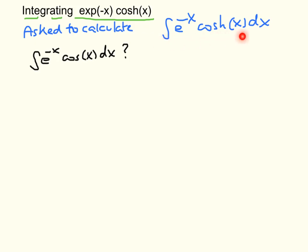Let's start off by looking at this integral. Let's remember that the hyperbolic function cosh of x is a combination of exponential functions with an even symmetry property. Because it's made up of exponential functions, it's going to be easier to expand this in terms of exponential functions, multiply this in, and then integrate it directly. Whereas here, the easiest way of calculating the integral is, in my opinion, to use integration by parts twice.